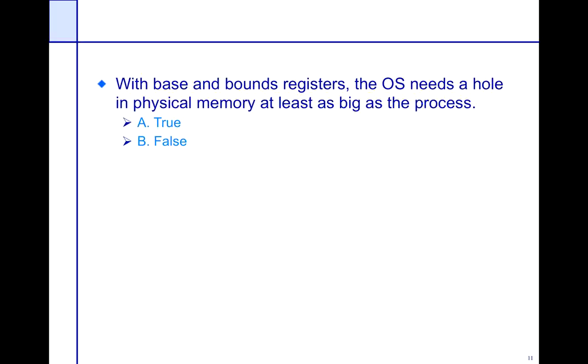Here's pop quiz question number 2. With base and bounce registers, the OS needs a hole in physical memory at least as big as the process — true or false? So what we're trying to say is that if all you had was base and bounce checks, then the whole program either resides in memory, which means you need a hole as big as the program, or you have to do worst-case allocation, or it's not necessarily the case.